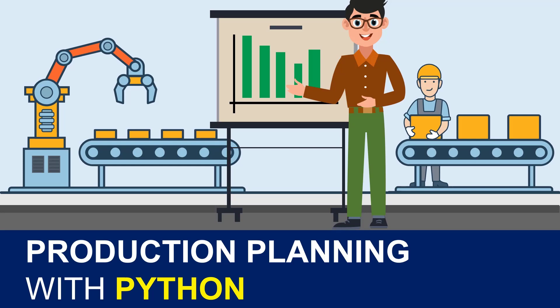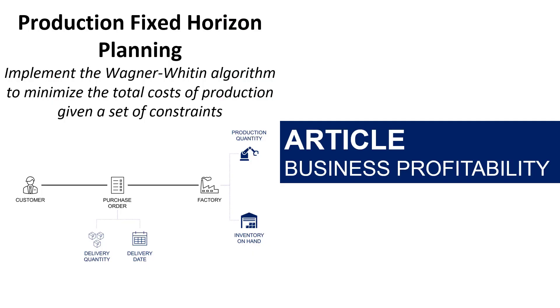Hey friends, welcome back to my channel for another tutorial on Supply Chain Process Optimization. In this video, we will implement the Wagner-Whitin algorithm to solve the fixed horizon production planning problem. This video is following an article I published in the Supply Chain Optimization section of my blog.